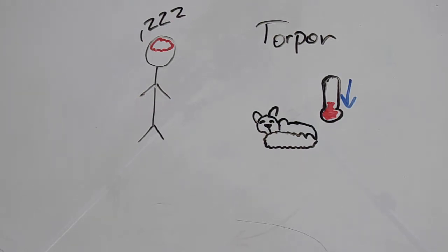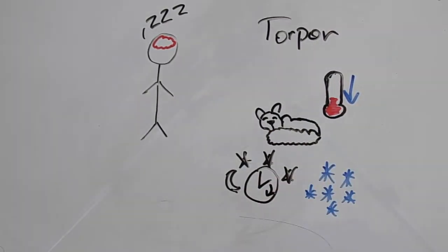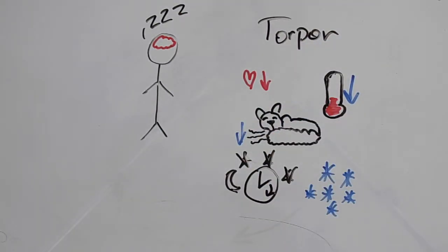This period can last only a few hours at night, or several months at a time during the winter. Regardless, in this state, the animal shuts down most of its major organ systems, reduces its heart rate, slows its breathing, and will not stir until torpor is over.